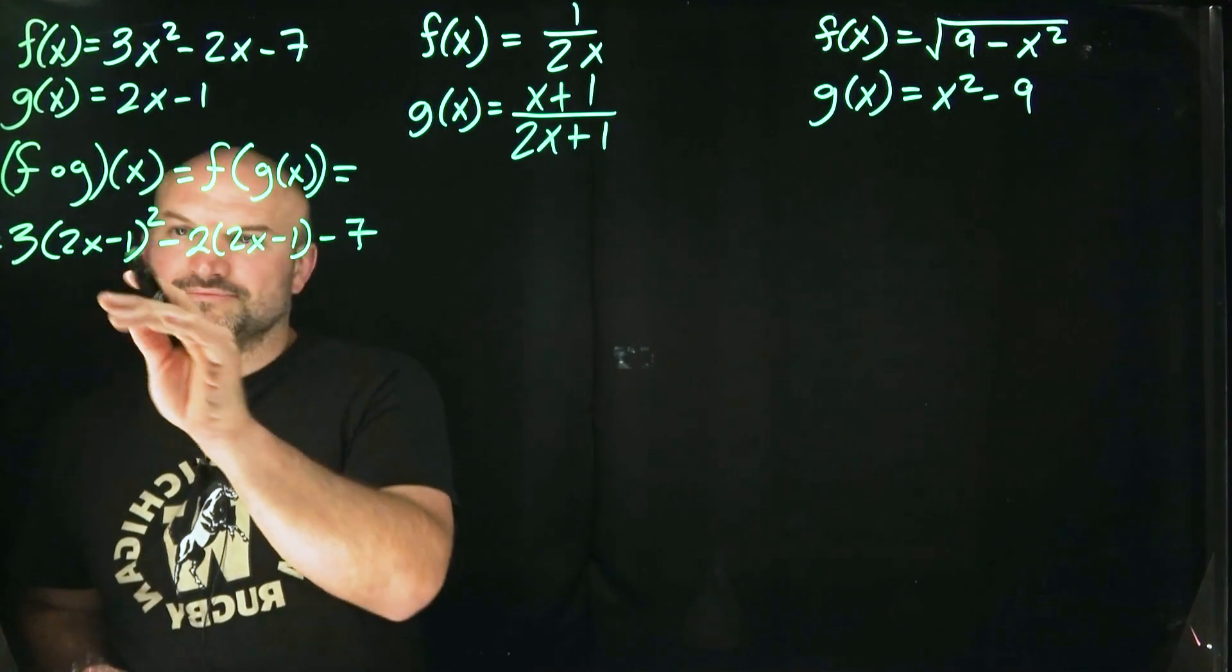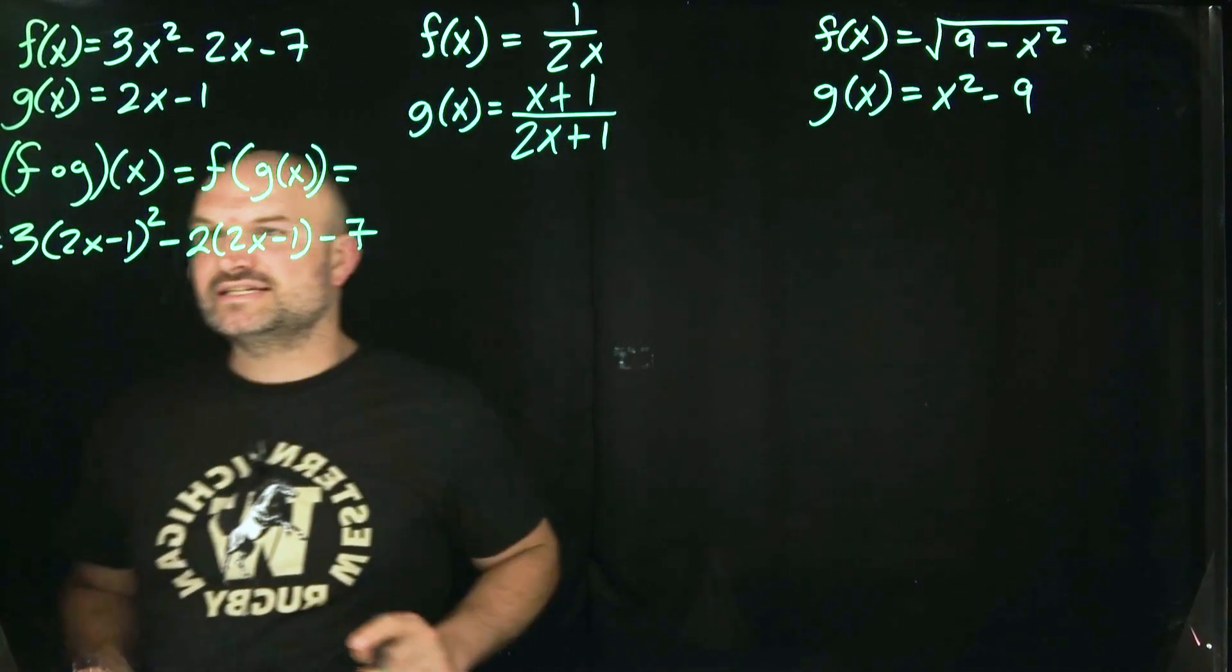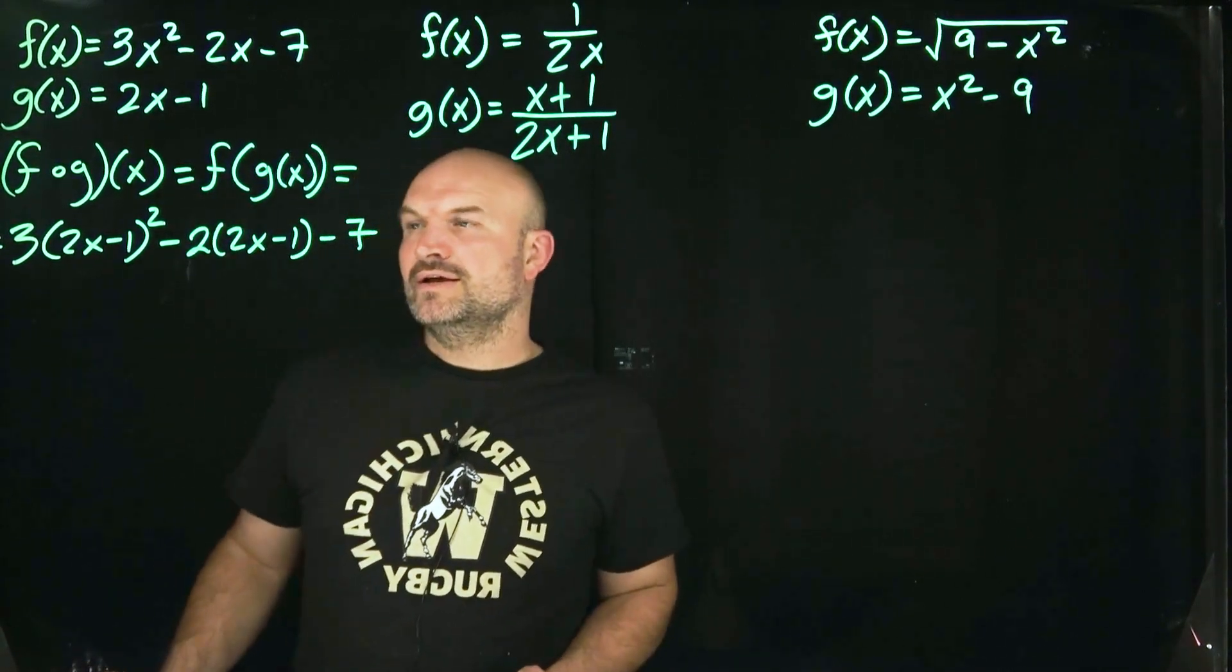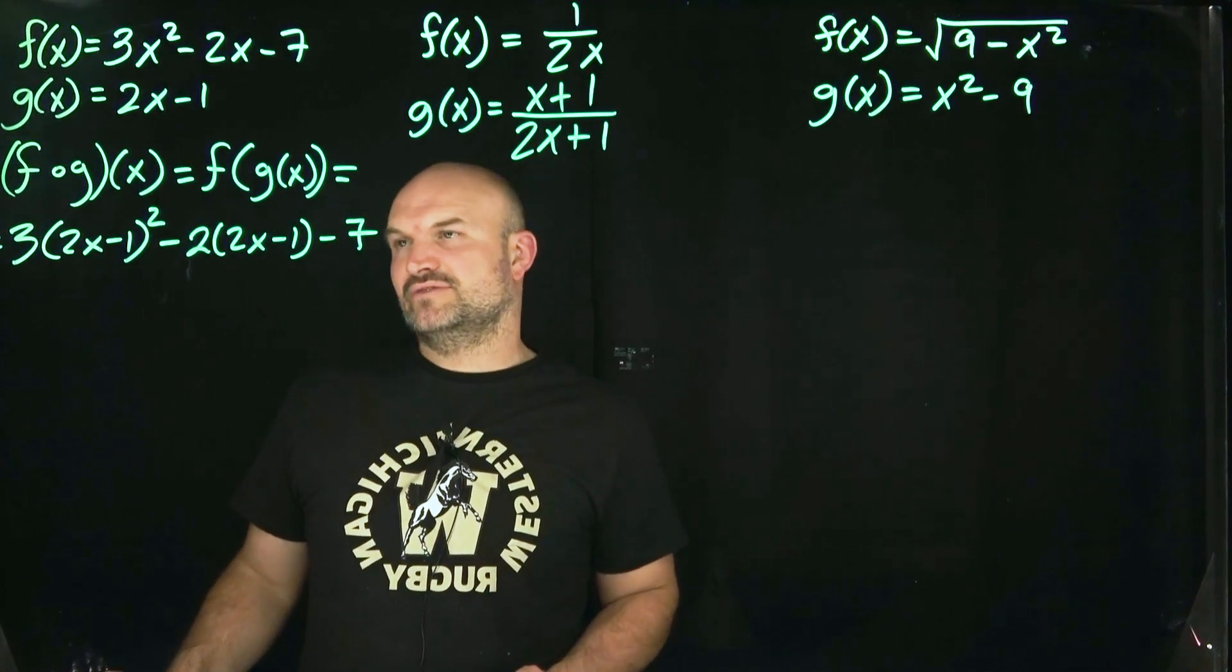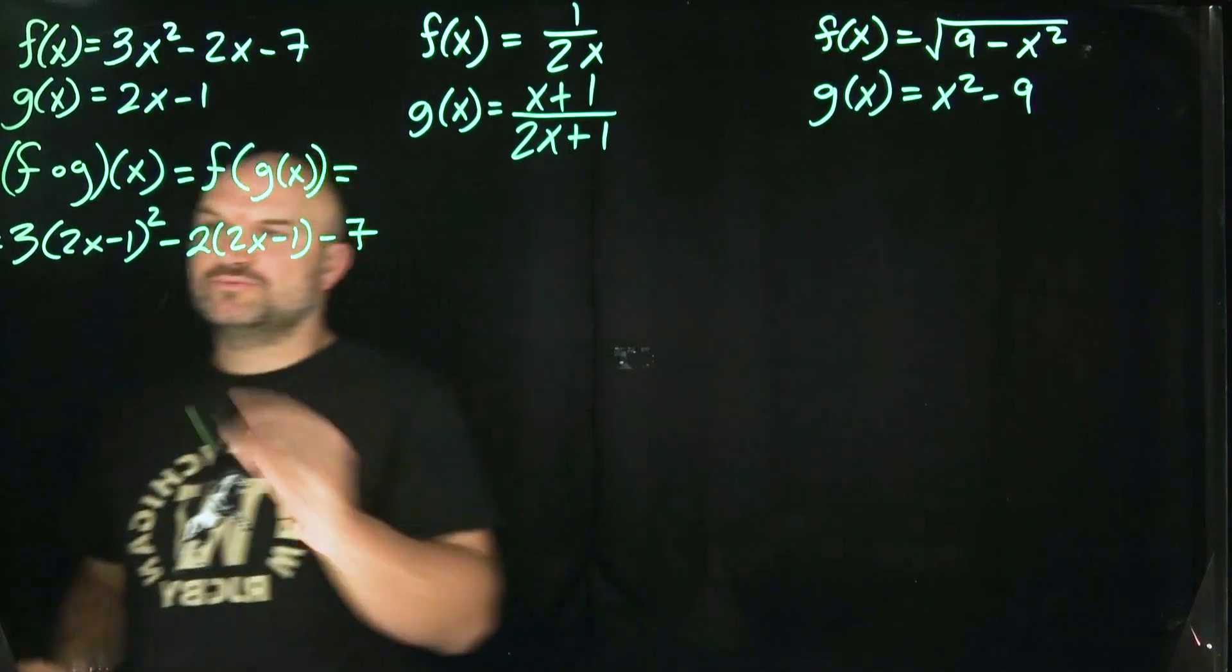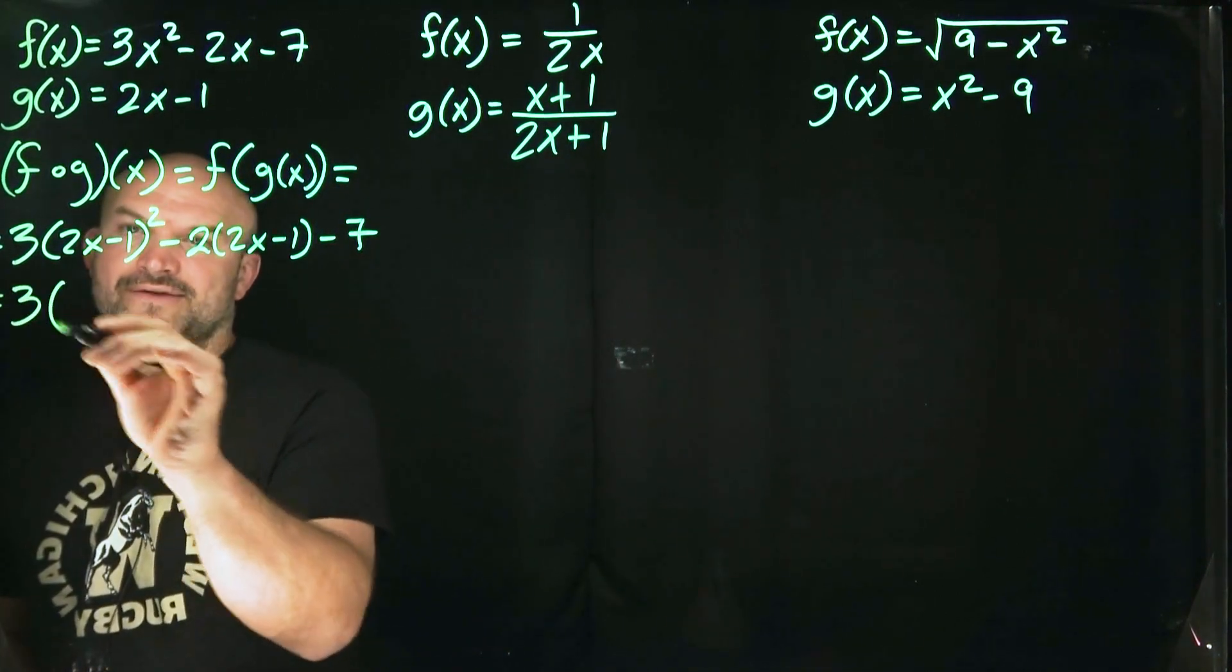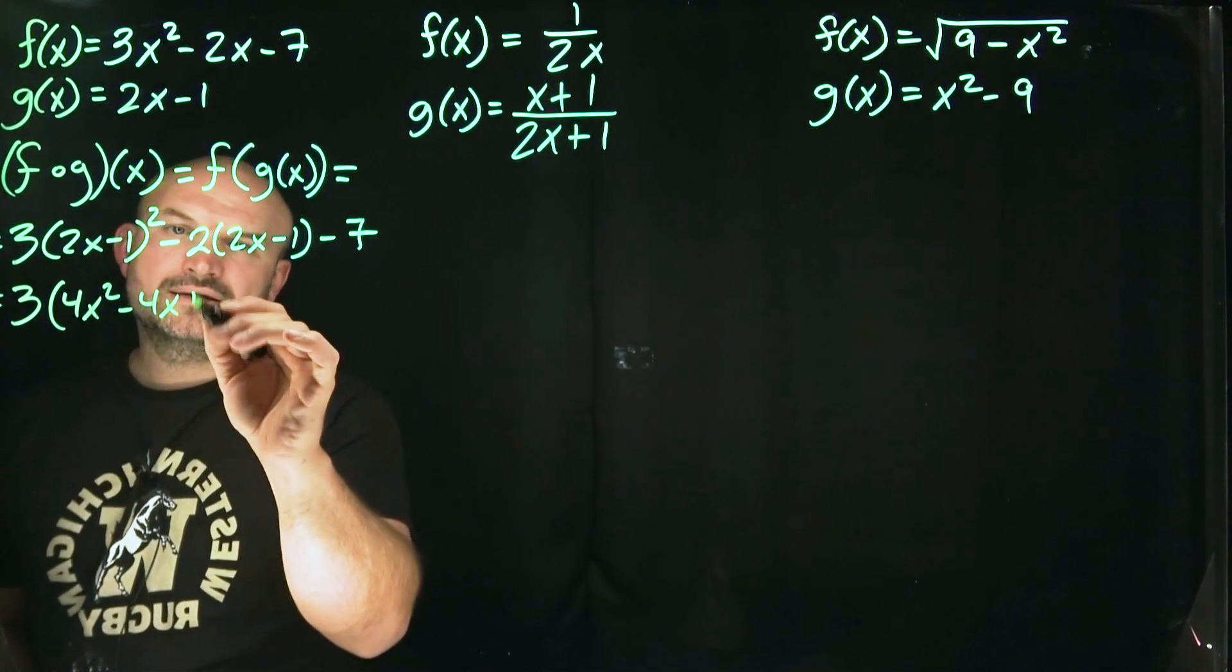That is going to give me a 4x squared, and then I'd have a 2x times negative 1 would be a negative 2x, 2x times negative 1, negative 2x. You're going to add those two up, that'd be a negative 4x, and that's plus 1. So let's see here, we've got a 3 times a 4x squared minus 4x plus 1.